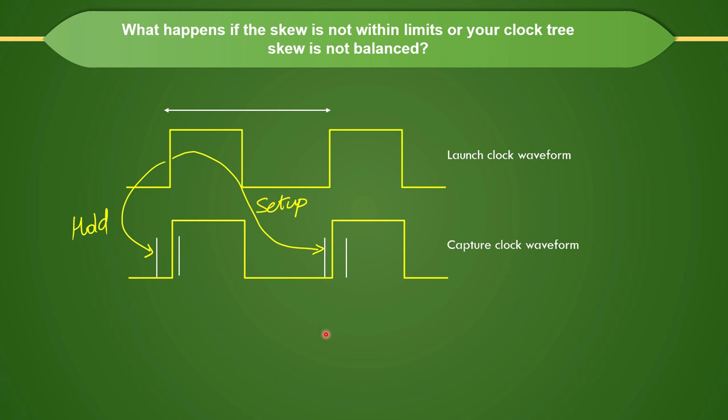But let's say we have certain latency at the capture side and your edge is occurring here. This is your capture edge; you can see there is a blue dotted line. If this is your capture waveform, the capture edge will be coming later. Let's say our clock period is 1 nanosecond. This edge is occurring at 1 nanosecond. But if your capture edge is delayed and occurs at 1100 picoseconds or 1.1 nanoseconds, then your skew will be 1.1 minus 1, which equals 0.1 nanoseconds or 100 picoseconds.